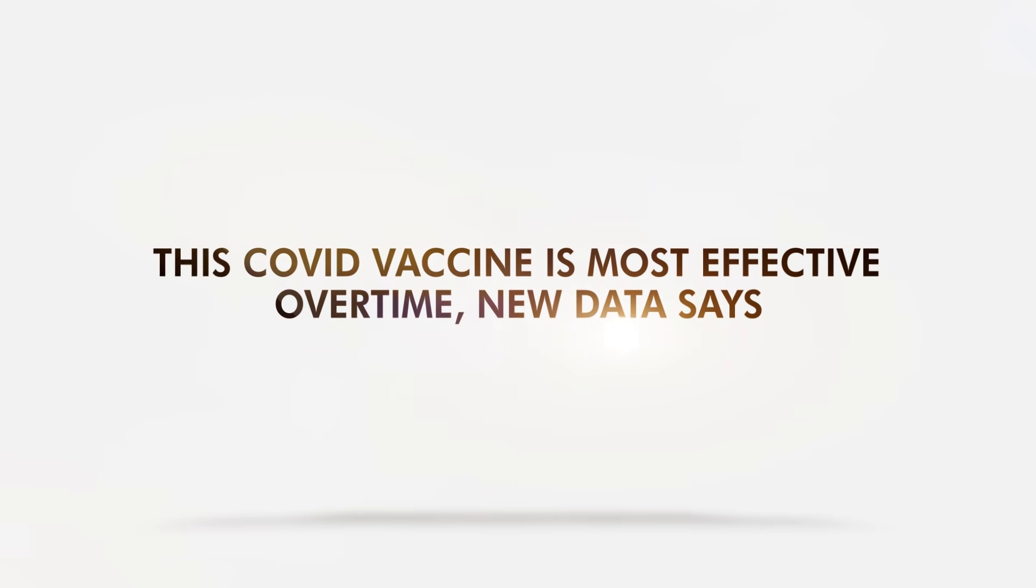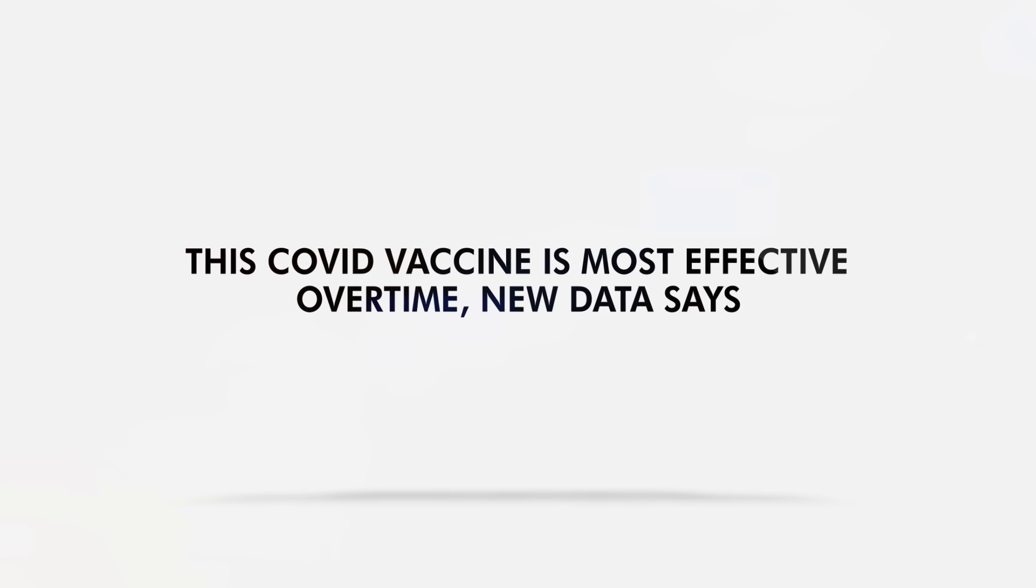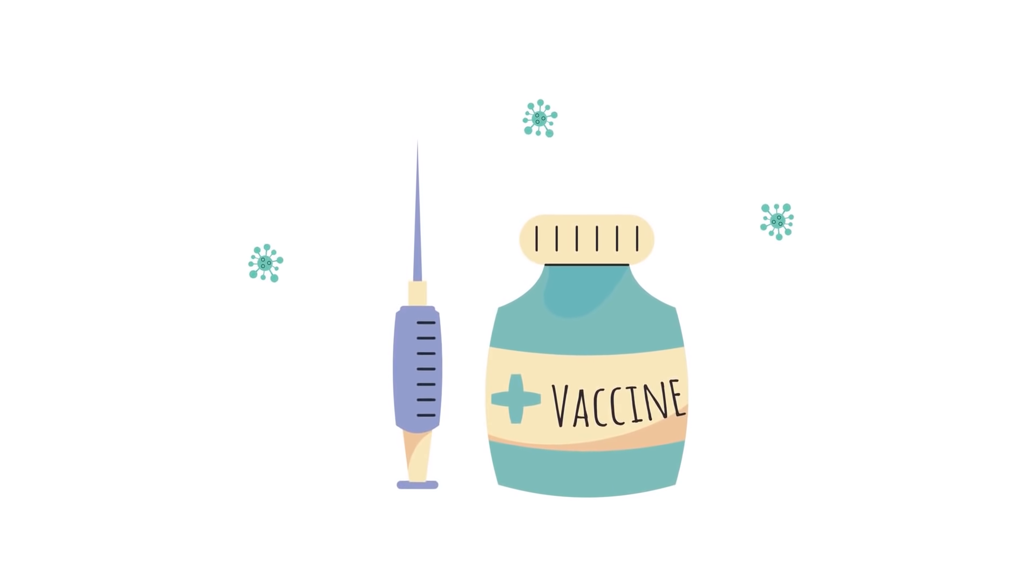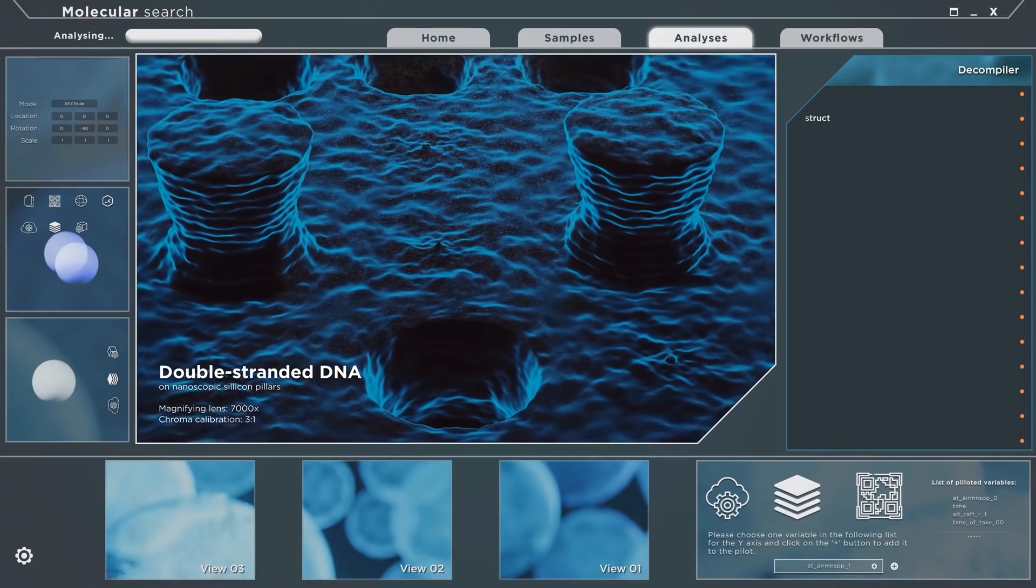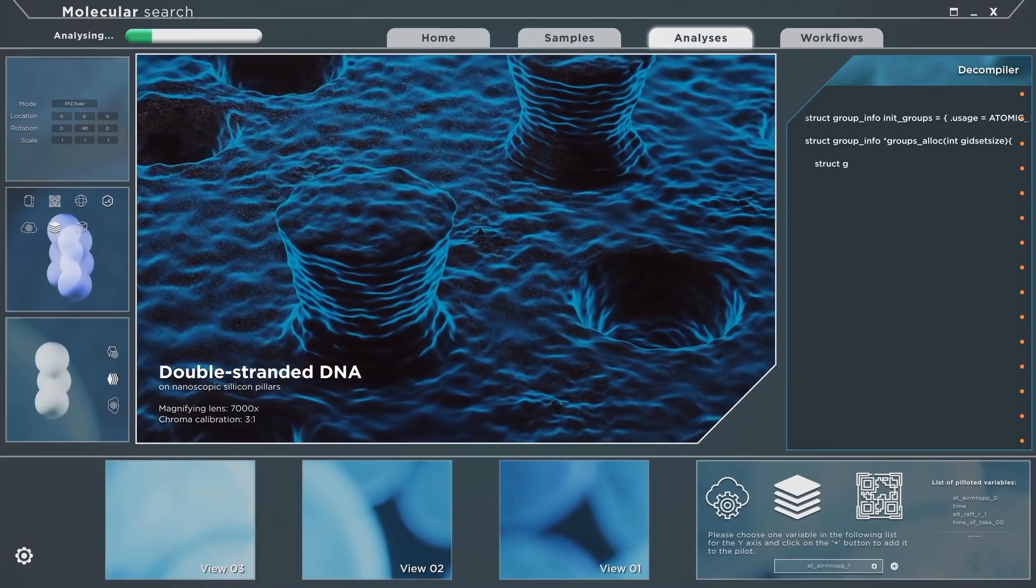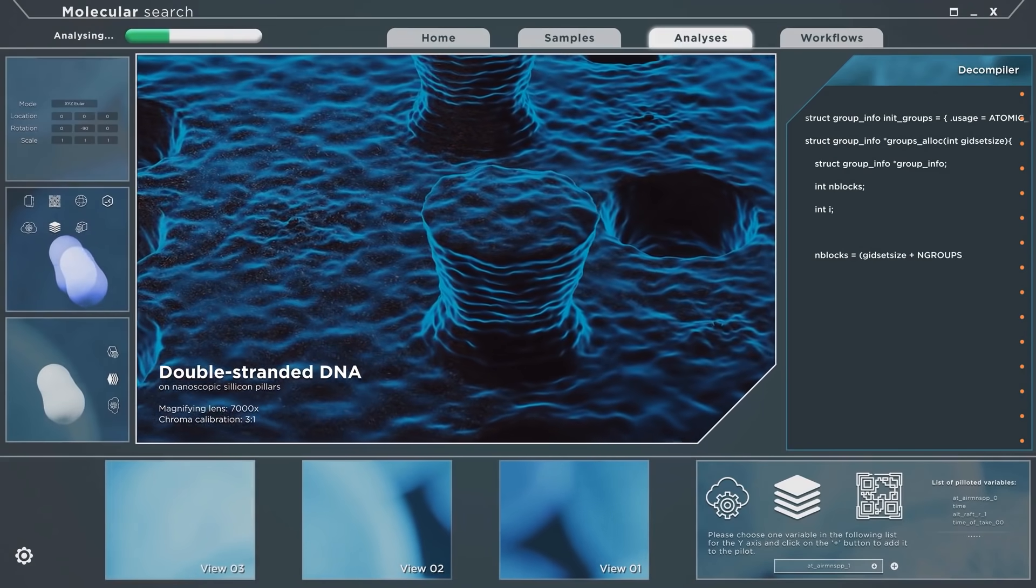This COVID vaccine is most effective over time, new data says. For some, Johnson & Johnson's COVID-19 vaccine may be inferior. Besides the issue with boosters, its efficacy is deemed lower than mRNA vaccines.